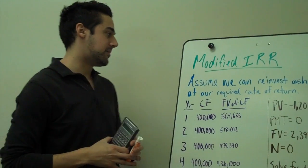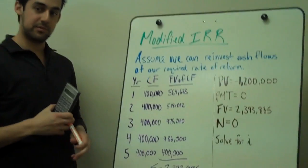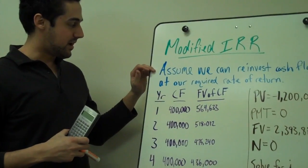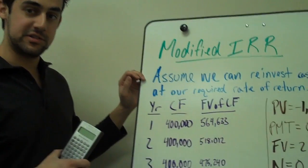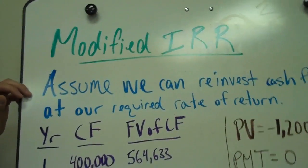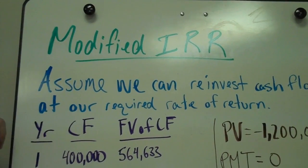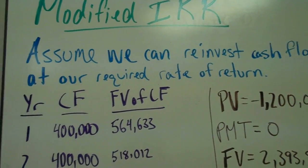Okay, now we are taking a look at our modified internal rate of return for this problem. Now with the modified internal rate of return, we are assuming that we can reinvest our cash flows at our required rate of return which was 9%.